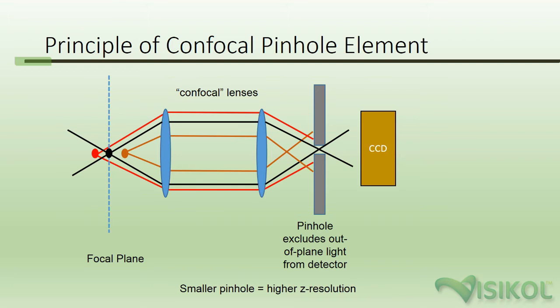Without the pinhole, all the fluorescent light from the entire depth of the tissue would reach the detector, and the image you would see would be a very blurry composite of all the planes within the tissue stacked on top of one another. The pinhole uses confocal lenses to focus the light captured from a tissue through a very narrow pinhole. This mechanism allows only light in the focal plane of the microscope's objective to pass through, rejecting out-of-plane light and allowing the microscope to optically section tissues and acquire stacks of optical Z slices.